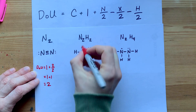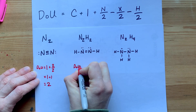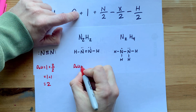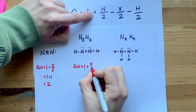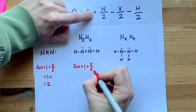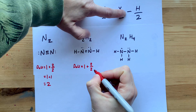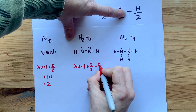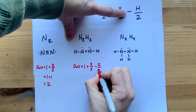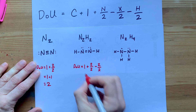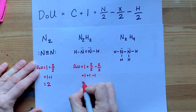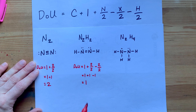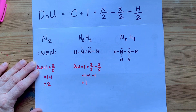For N2H2: no carbons, constant 1, plus 2 nitrogens divided by 2, no halogens, and we do have 2 hydrogens this time. So: 1 + 1 − 2/2 = 1 + 1 − 1 = 1. This has a degree of unsaturation of 1, because there is one double bond.